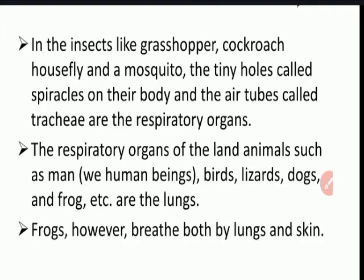Insects like grasshopper, cockroach, horsefly, and mosquito have tiny holes called spiracles on their body and air tubes called tracheas — these serve as their respiratory organs. Land animals such as man, bird, lizard, dog, and frog have lungs. Note: frogs breathe both by lungs and skin.